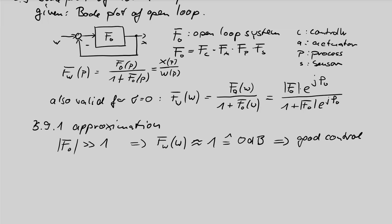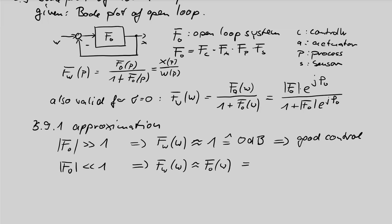In the opposite case: what happens if we have a small open loop gain? If the open loop gain is small compared with 1, we can make the opposite approximation and neglect the magnitude term. As a result, the closed loop and open loop have the same value. This means there is essentially no control — no change is caused by the negative feedback. It is as if we have no feedback, and the open loop system has no significant control over the output.